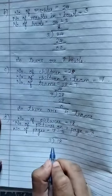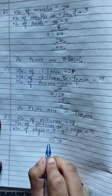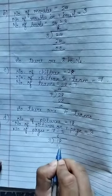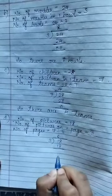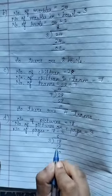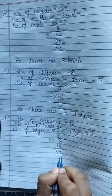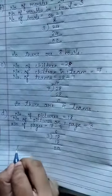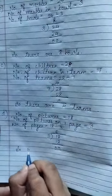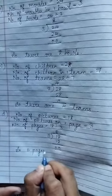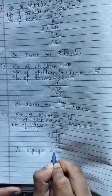3 goes into 18 exactly — 3 sixes are 18. So, we will write 6 here. 18 minus 18: 8 minus 8 is 0, 1 minus 1 is 0. The answer is 6. So, 6 pages are needed.